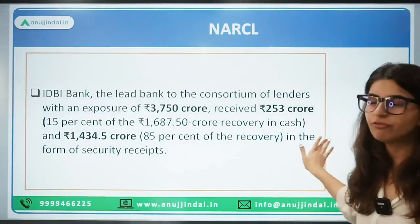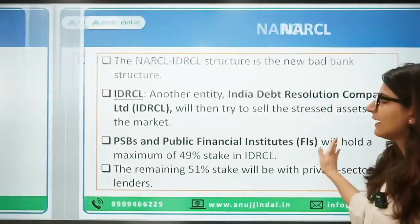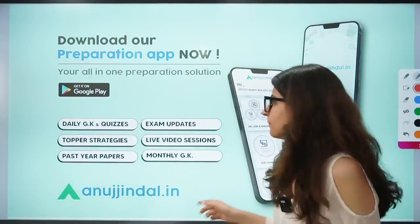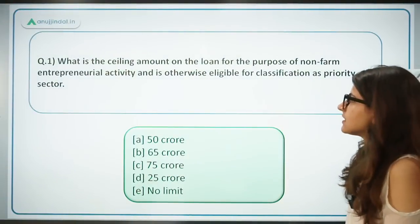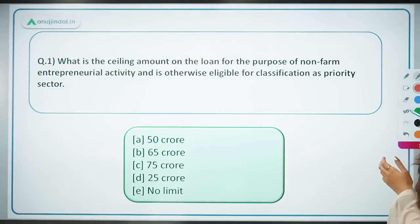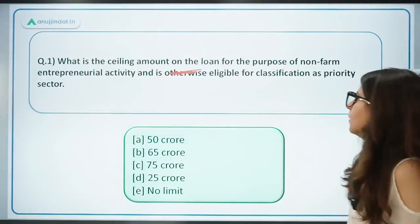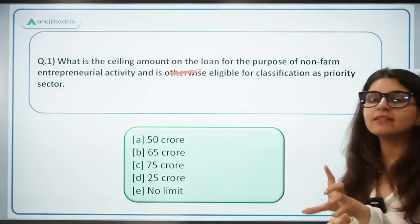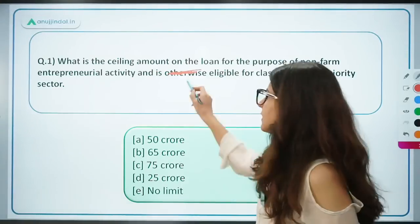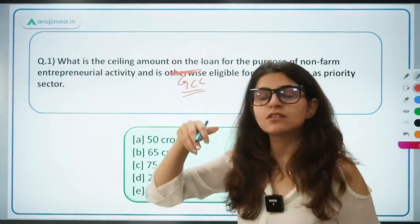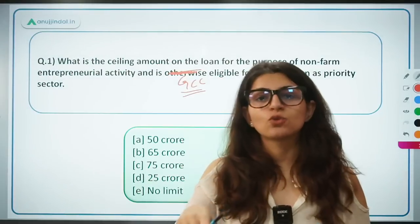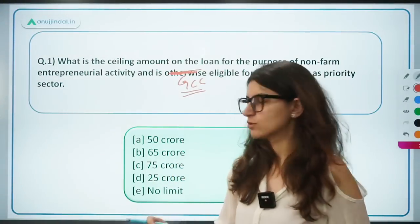The numbers in the JP Infratech example are not critical for your exam. This covers everything about NARCL and IDRCL — please go through this once as it is very important and can be asked in descriptive. Regarding a practice question: what is the ceiling amount on a loan for non-farm entrepreneurial activity eligible under PSL under the GCC? There is no upper limit or ceiling — it is decided on a case-to-case basis based on risk assessment of the individual.